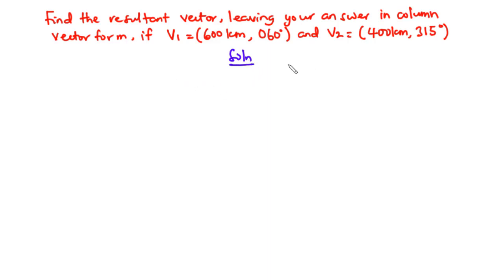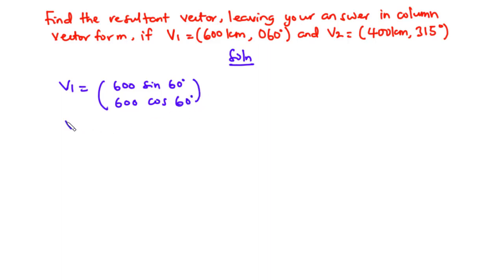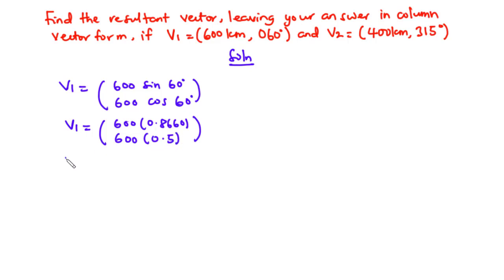Let's resolve v1 and v2 as column vectors, starting with v1. In column vector form, v1 becomes [600 sin60, 600 cos60]. Sin 60 is 0.8660 and cos 60 is 0.5. So 600 times 0.8660 gives 519.6 and 600 times 0.5 gives 300. This is the column vector representation of v1.